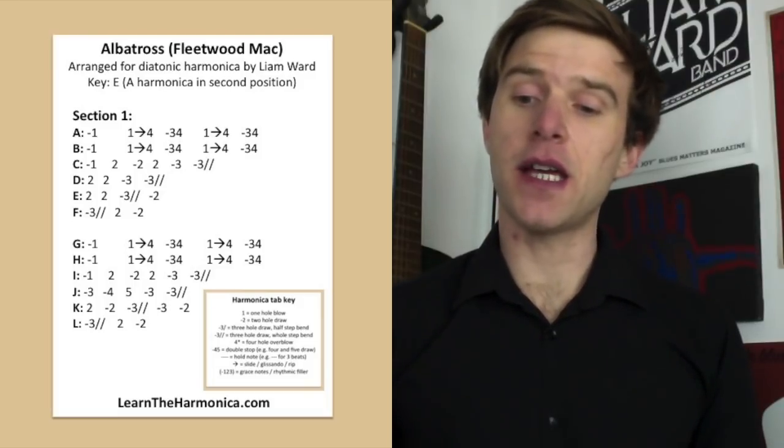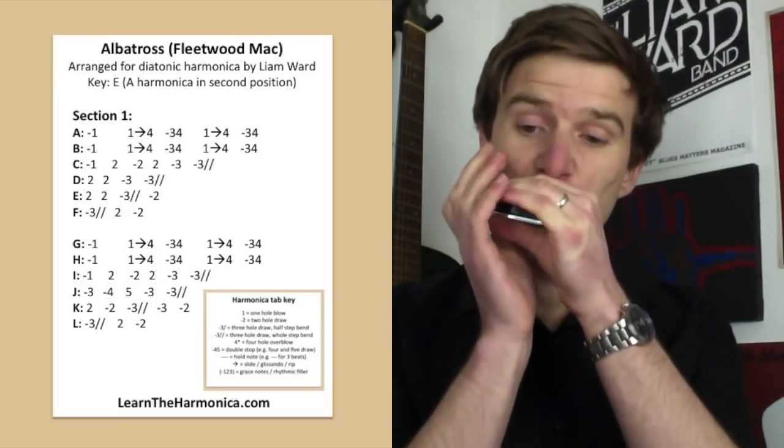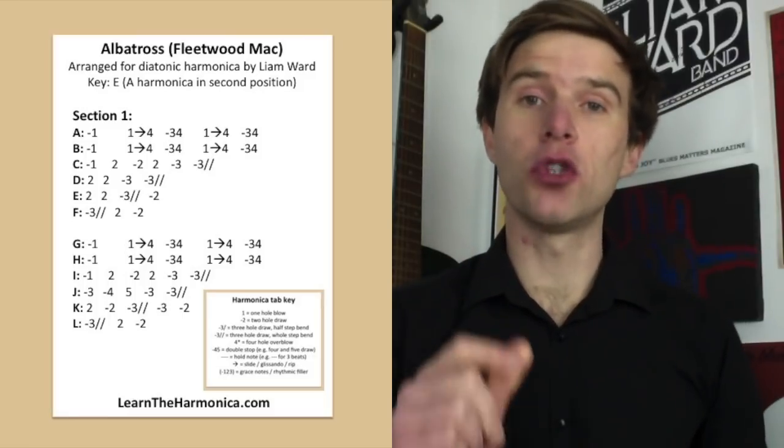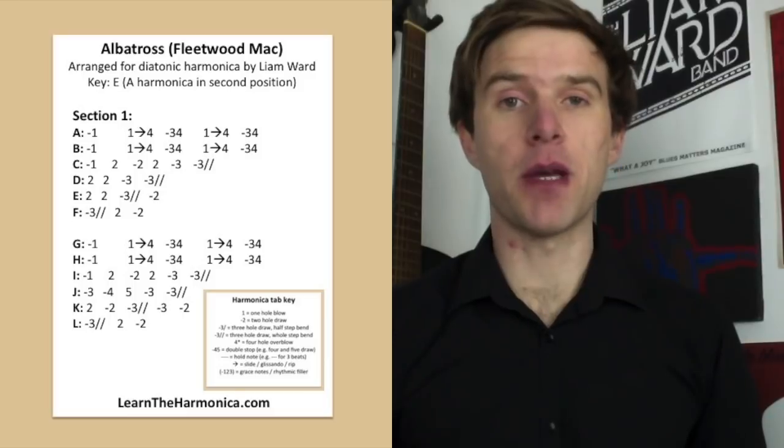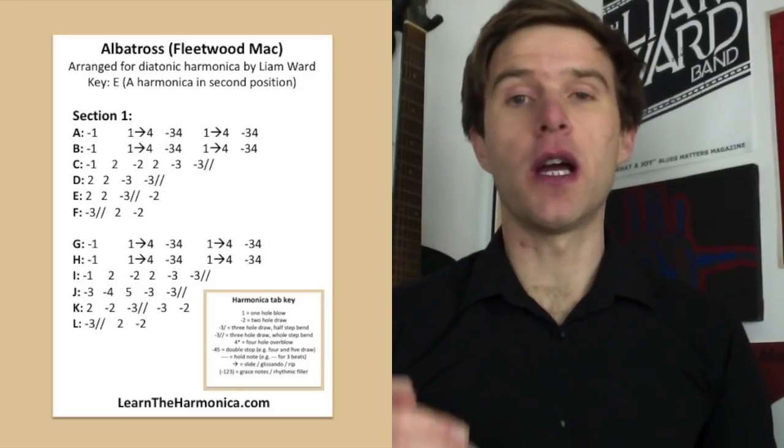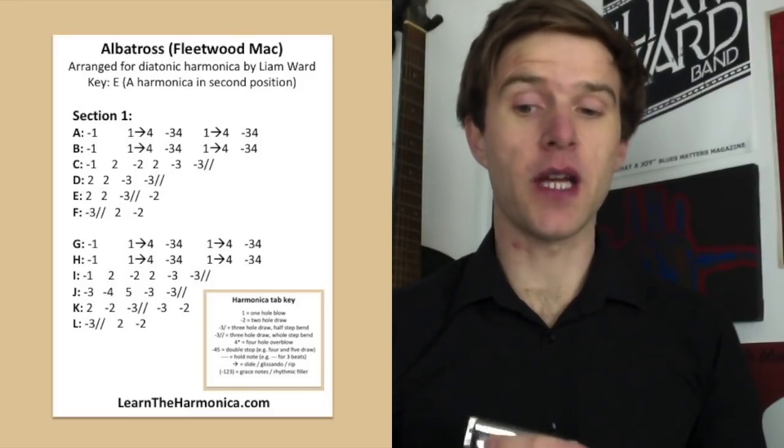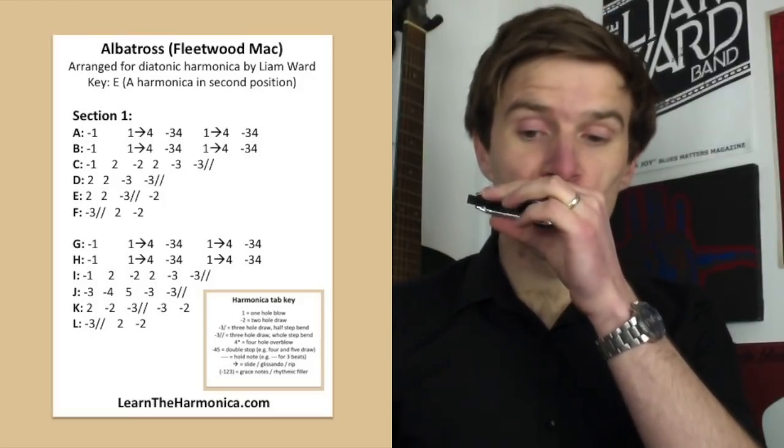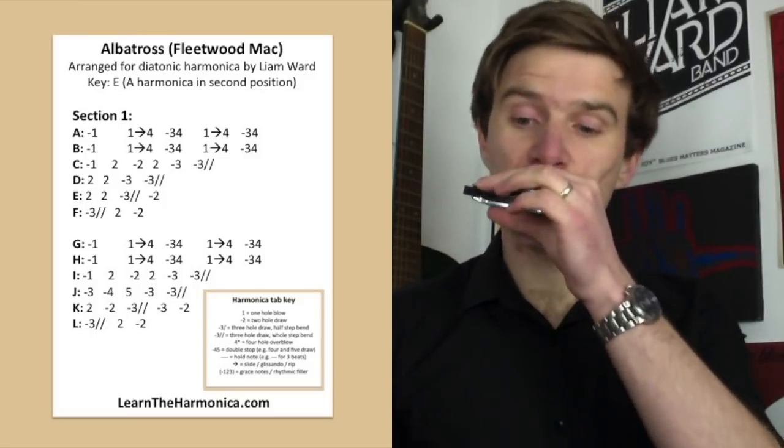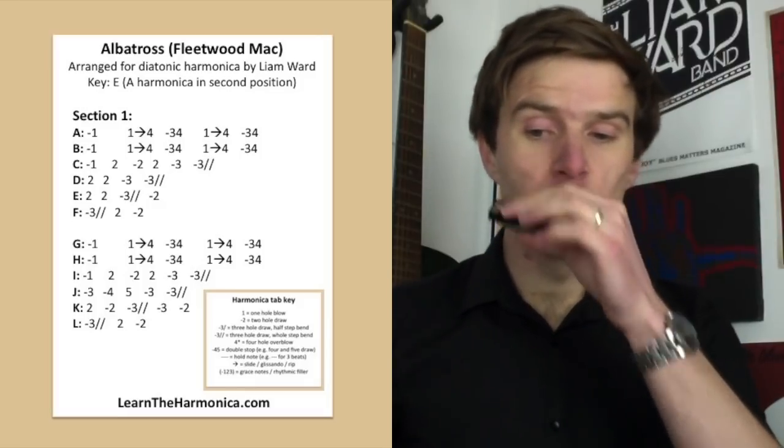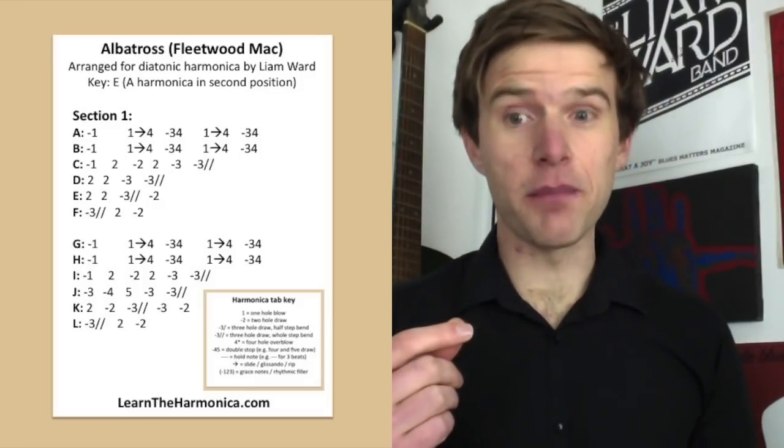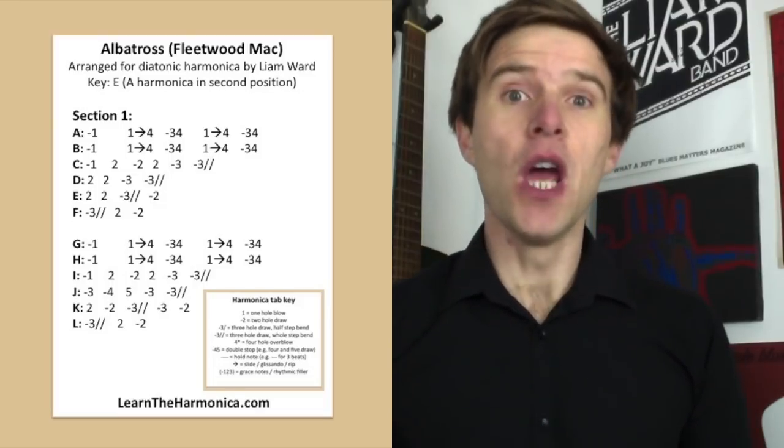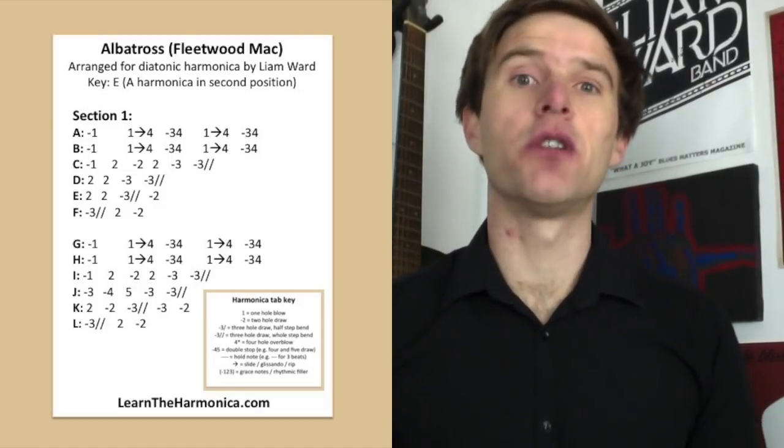Okay. So K and L just to go now. So we've got two blow, two draw, three draw full step bend, three draw, and then two draw. That's line K. And then line L, so three draw full step bend, two blow, and then two draw just to finish. So that's the end of the first section of Albatross.